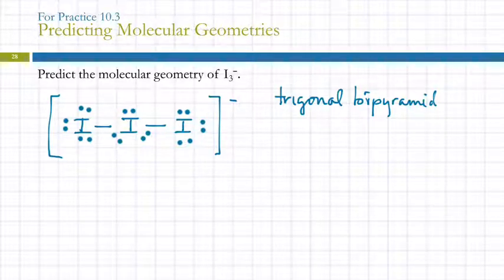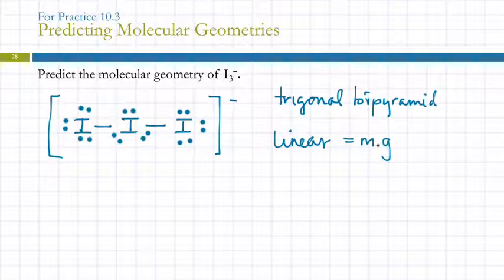So that's the electron geometry. The molecular geometry is going to be linear. If you took off the wrong pieces, you could end up with something that's bent with a 90-degree angle, or you could end up with something that's bent with a 120-degree angle, and both of those would be wrong.